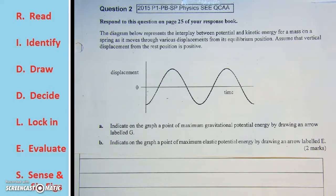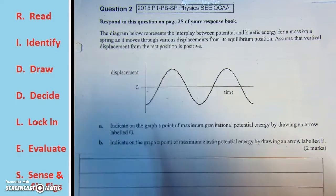Respond to this question on page 25 in your response book. The diagram below represents the interplay between potential and kinetic energy for a mass on a spring as it moves through various displacements from its equilibrium position. Assume that vertical displacement from the rest position is positive.